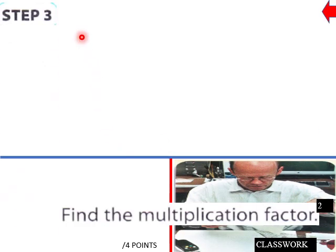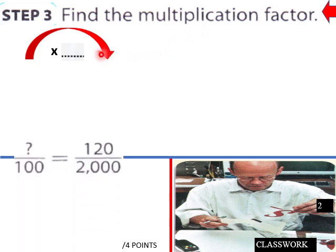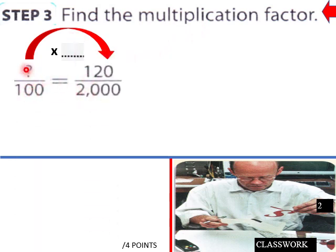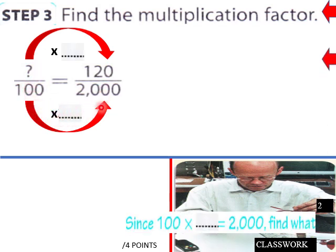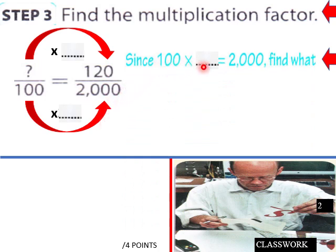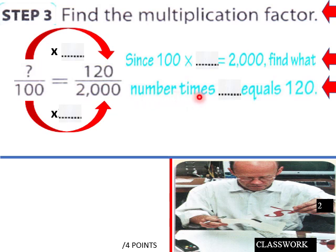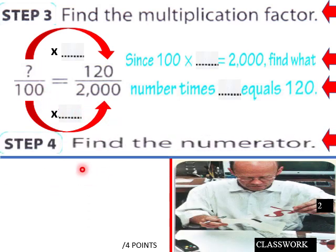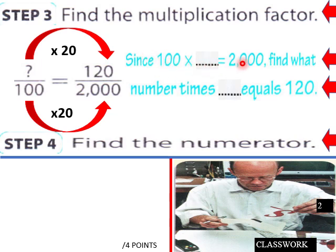Step 3: Find a multiplication factor. We set up the proportion as blank over 100 equals 120 over 2000. We ask: what times 100 equals 2000? The answer is 20, so 100 times 20 equals 2000. Now we need to find what times 20 equals 120.